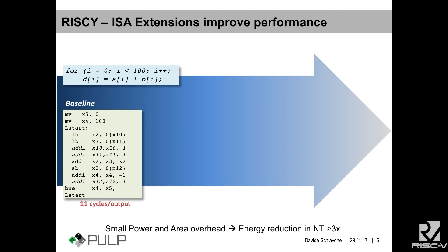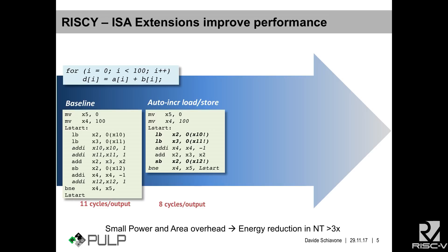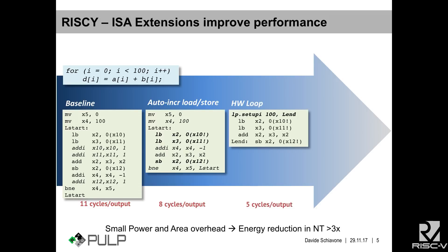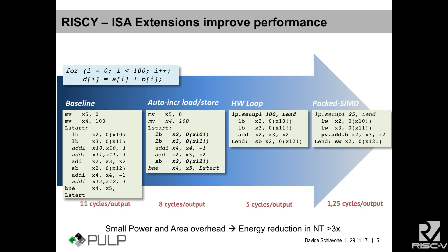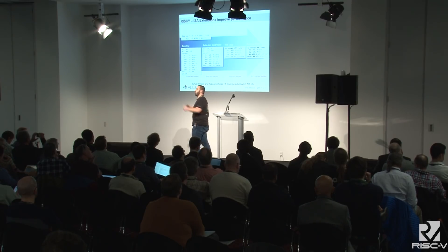Let's look at an example of our PULP extensions. Assume you want to add two vectors from a sensor that is 8-bit. With auto-increment load and store, you can fuse the load instruction with the increment of the pointer of these vectors. With hardware loops, you remove the overhead of branches and comparisons, reducing code size and increasing throughput. With packed SIMD, you put multiple elements in one 32-bit register — you can fit four elements, compute four additions, and store four results back.